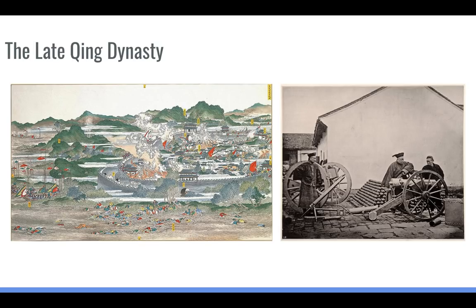Beyond that, there are other reactions to what was going on in China. Understanding that they were behind with industrialization, China sought ways to improve through a government-sponsored industrialization plan called the Self-Strengthening Movement. Though largely a failure, its intent was for the Chinese to learn how to industrialize and create new industrial machinery from Europeans, then use their own intellect and tradition to not only master that technology but improve upon it, vaulting themselves back to world power status.